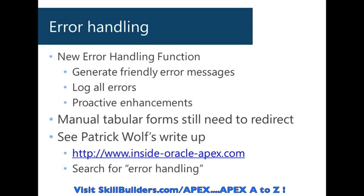So what does it do? It very easily allows you to generate friendly error messages when things go wrong in our applications. It also allows us to more easily log errors — so when things go bad, we can put them in a table for reference. Another thing this allows us to do is, because we're logging our errors, it kind of allows for this idea of proactive enhancement. Sometimes users run into an issue and they're smart enough to figure out how to get around it, so they don't report the issue. But you don't want your users having to work around your application. This lets us see those instances where errors aren't getting reported.